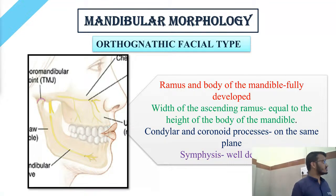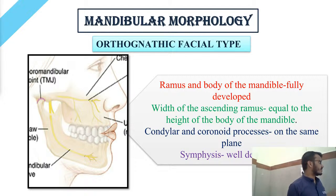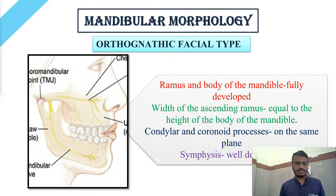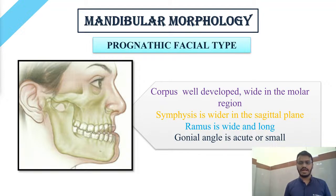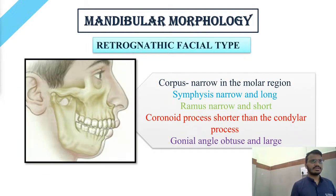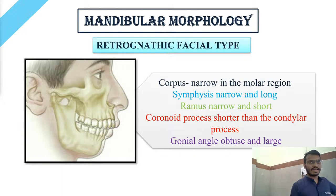Mandibular morphology can be classified as: orthognathic facial type — ramus and body fully developed, width of ascending ramus equal to width of mandibular body, coronoid and condylar processes at the same level, symphysis well developed; prognathic facial type — corpus well developed and wide in the molar area, symphysis wider in the sagittal plane, ramus wide and long, gonial angle acute or small; retrognathic type — corpus narrow, symphysis narrow and long, ramus narrow and short, coronoid process at a lower level than the condylar process, and gonial angle obtuse and large.